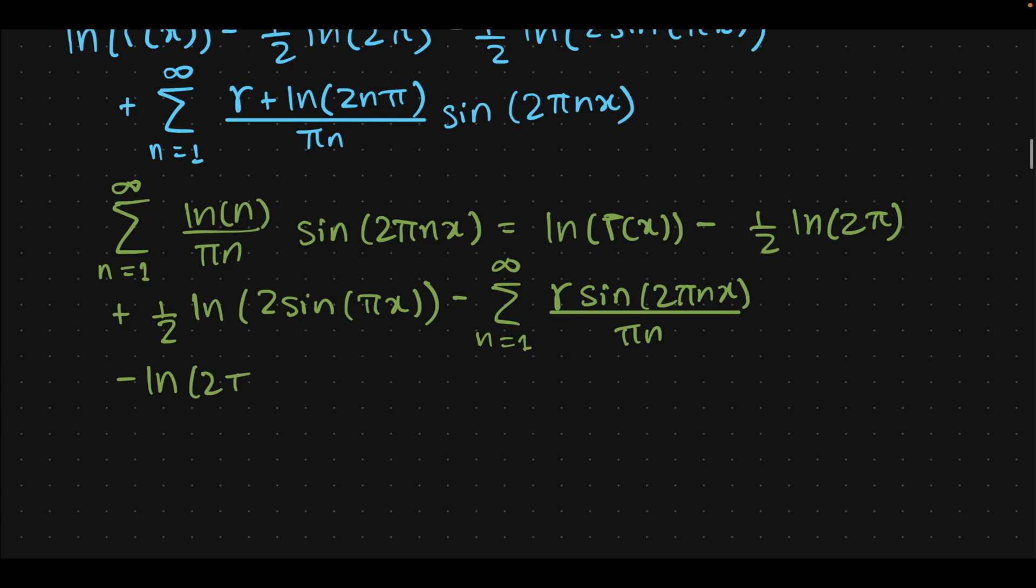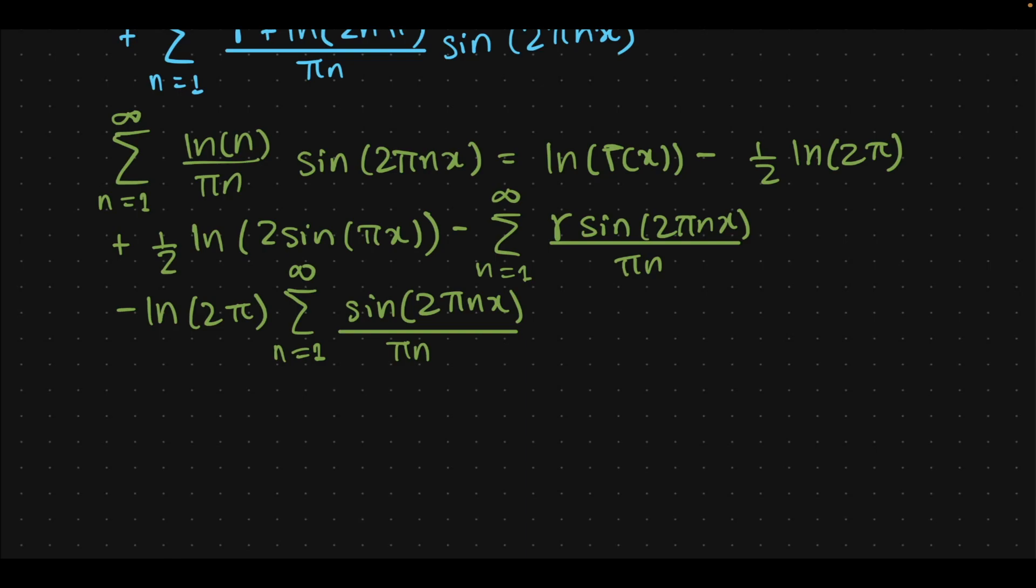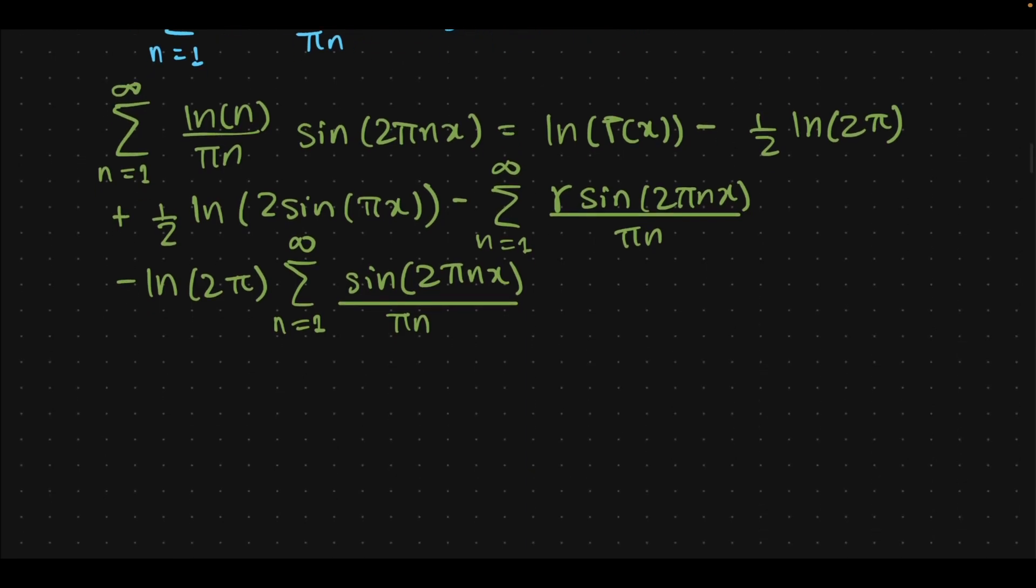Minus natural log of 2π—this is the breaking term—sine of 2πnx over πn. Now what stands in the road of our simplification and us right now is these infinite series here, the ones that especially have the sine 2πnx over πn in both cases, because the gamma can be taken out.